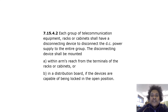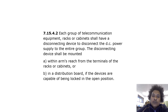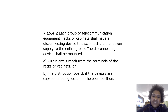Each group of telecommunication equipment racks or cabinets shall have a disconnecting device to disconnect the DC power supply to the entire group. The disconnecting device shall be mounted within the terminals of the racks or cabinets, or in a distribution board, if the devices are capable of being locked in the open position.